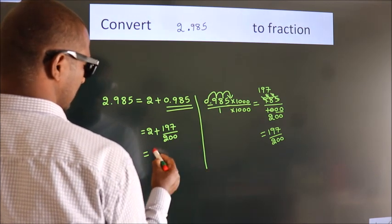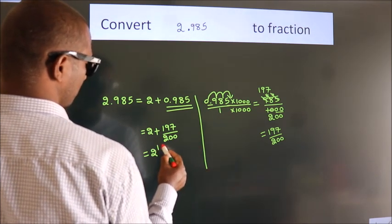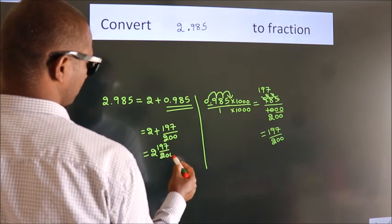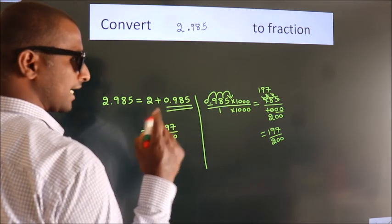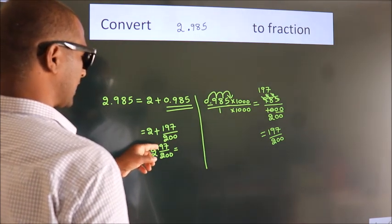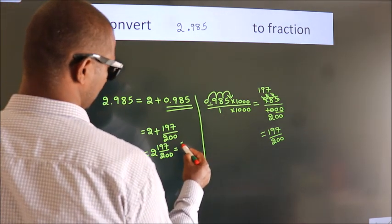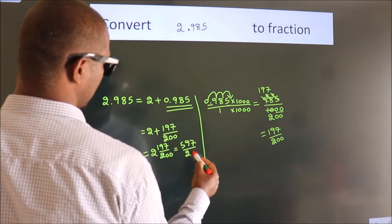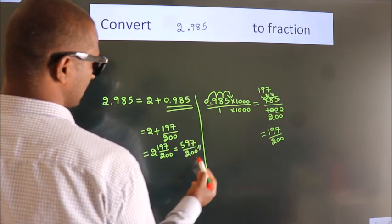In mixed fraction, it is 2 into 200, 400 plus 197, by 200. This is our fraction.